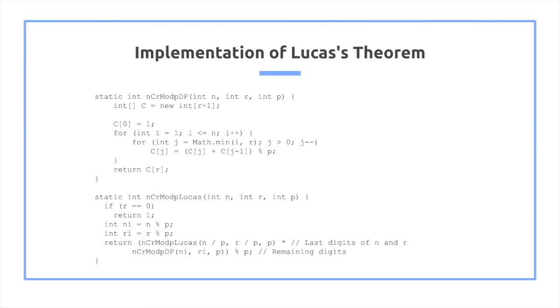So how does this actually look? The code is actually very simple. We take n and choose r mod p Lucas. Now inside of this, we have our base case r is equal to 0 when we return 1. And then what we do is we take n i and compute r i. So where does this even fit in? So we look at our formula.